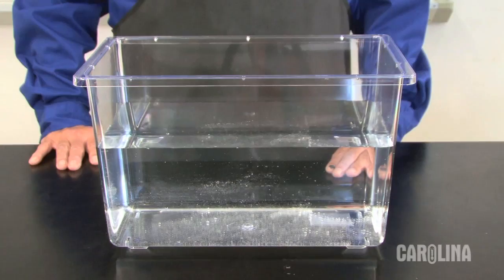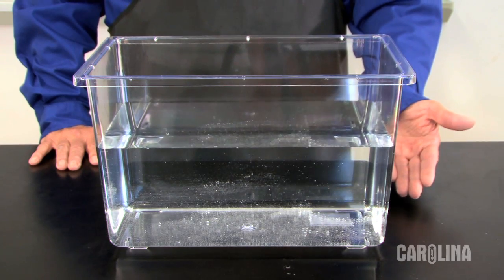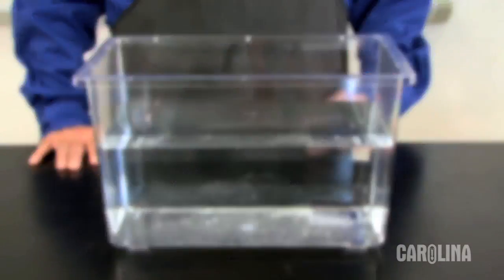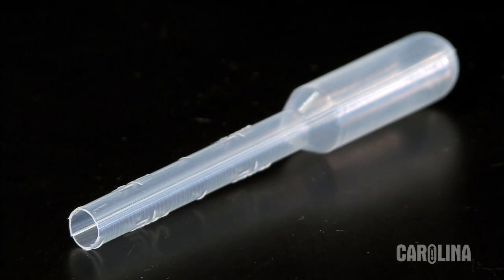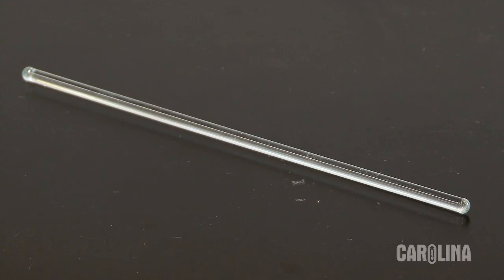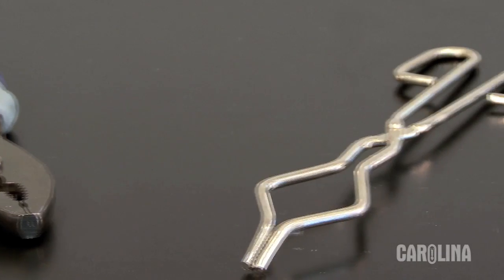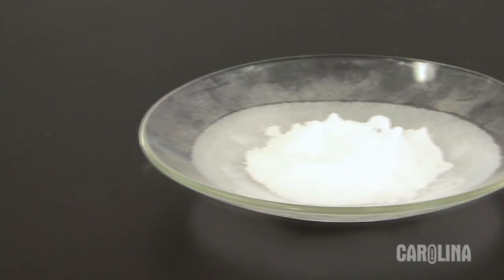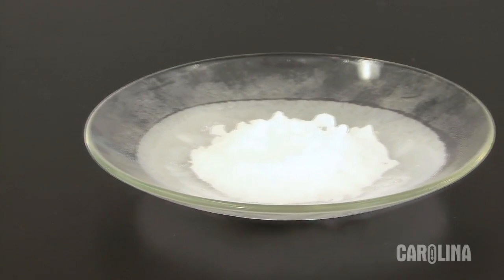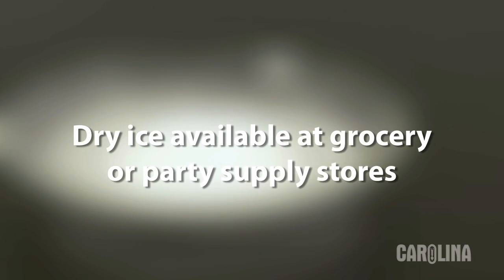To perform this demonstration, you will need a large plastic tank about half filled with water, a large stemmed plastic pipette with the tip cut off, a thin glass stirring rod that will fit inside the stem, pliers or tongs, and some pulverized dry ice on a watch glass. You can get dry ice at a grocery store or party supply store.